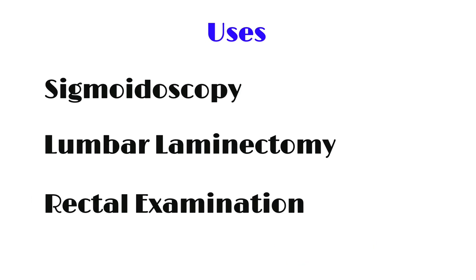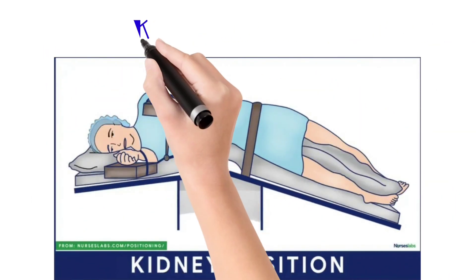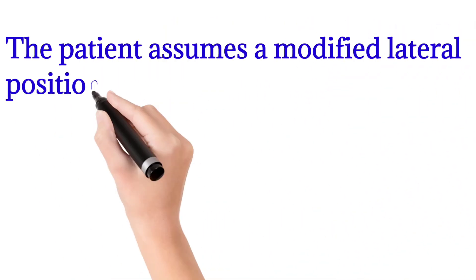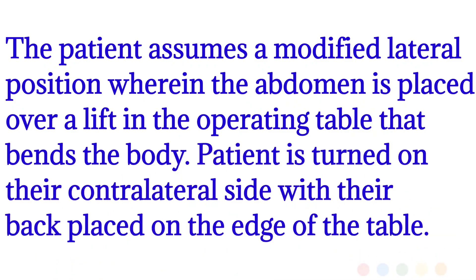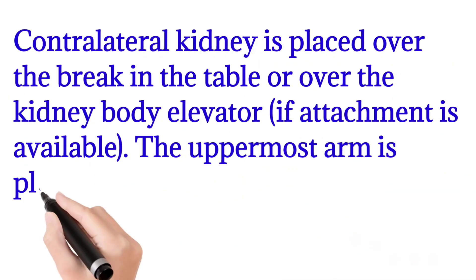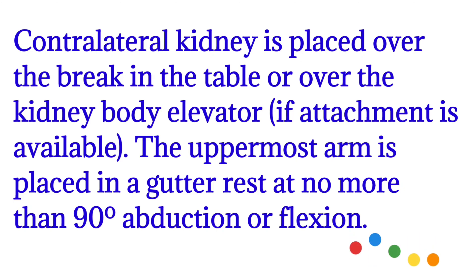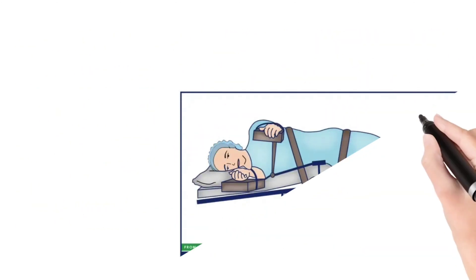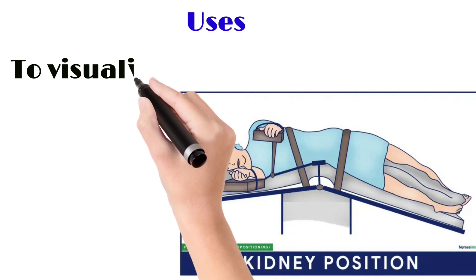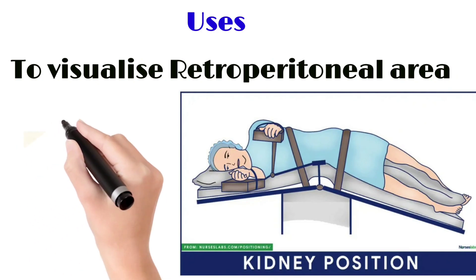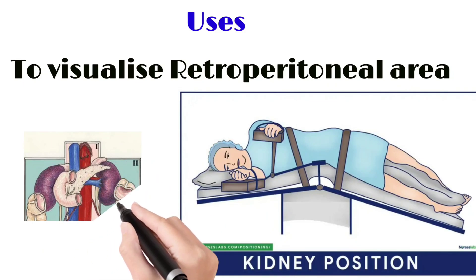Next is the kidney position — a unique position. The patient assumes a modified lateral position where the abdomen is placed over a lift in the operating table, bending the body. The patient is turned on their contralateral side with the back on the edge of the table, so the head and legs go down and the retroperitoneal area is clearly visualized. Uses include visualization of the retroperitoneal area and kidney surgeries.